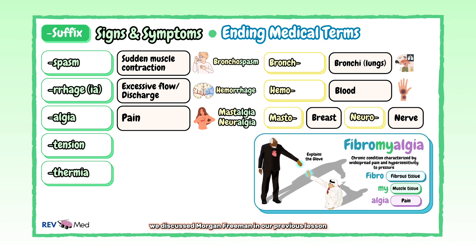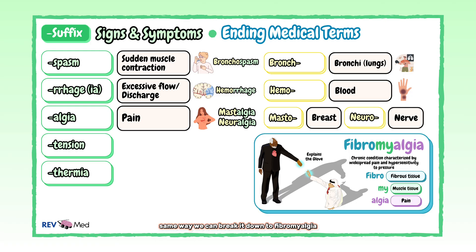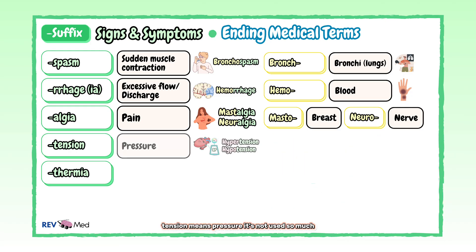Remember we discussed Morgan Freeman in our previous lessons. During the FIFA World Cup, he displayed his battle with fibromyalgia. We can break it down the same way: fibromyalgia. "-Tension" means pressure. It's not used so much, but we know it in hypertension and hypotension, signifying high or low blood pressure.